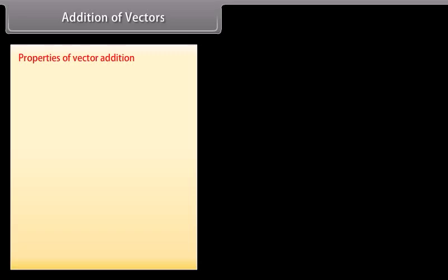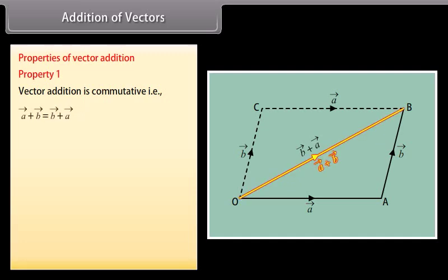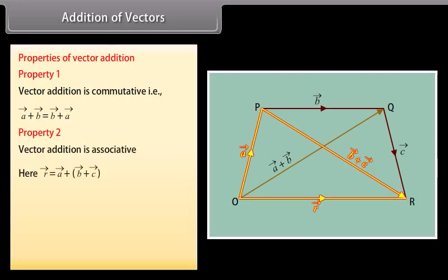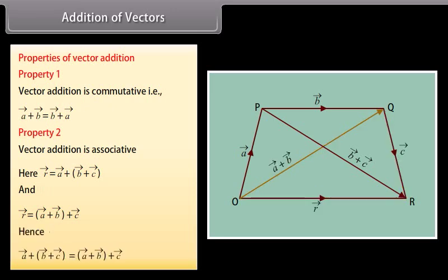Addition of Vectors — Properties of Vector Addition. Property 1: Vector addition is commutative, that is, vector A plus vector B equals vector B plus vector A. Property 2: Vector addition is associative. Vector R equals vector A plus vector B plus vector C, and also vector R equals vector A plus (vector B plus vector C). Hence, (vector A plus vector B) plus vector C equals vector A plus (vector B plus vector C).